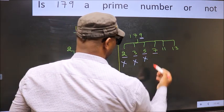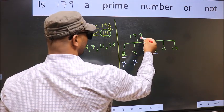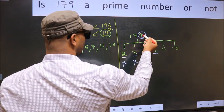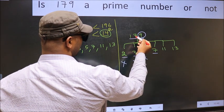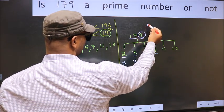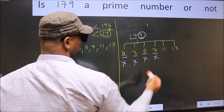Next, number 7. To check divisibility by 7, you double this: 9 into 2, 18. Subtract from this: 18 minus 17, we get 1. 1 is not divisible by 7, so this number is also not divisible by 7.